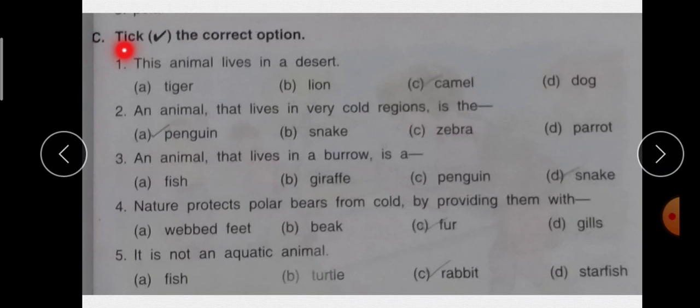Next है C part. That is tick the cracked option. MCQs है. ठीक है option दिये गए है. जो cracked answer है. आपने उसके उपर टिक लगाना है. First है this animal lives in a desert. कि इन में से कौन सा animal जो है desert में रहता है? Tiger, loin, camel, dog. तो correct answer है C that is camel.